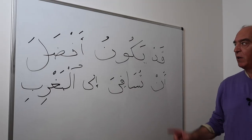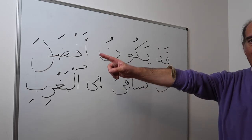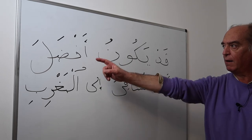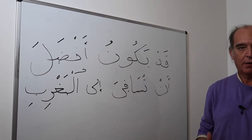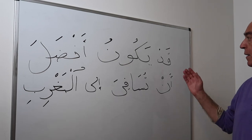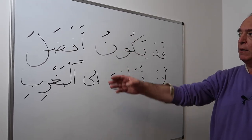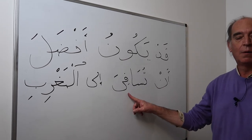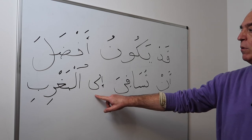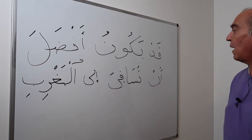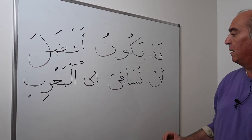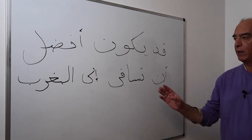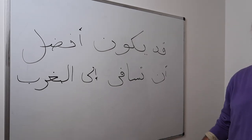The same nuance is expressed by qad instead of rubbama: qad yakounu means 'it might be' or 'it may be.' Another example: qad yakounu afdala an tusafir ilal maghribi. Afdal means preferable or better. So I'm saying: it could be better — it could be the best thing — that you travel to Morocco.